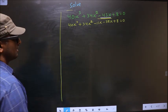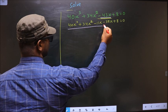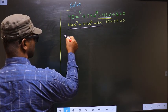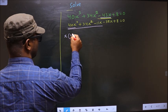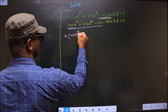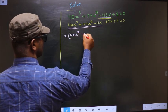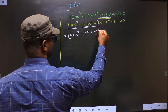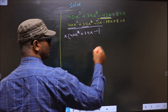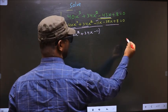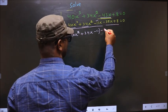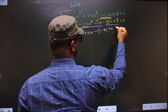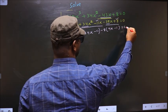Now from the first three terms, what can you take out common is x. So here you get 40x square, and here you get plus 34x, and here you get minus 11. Now from the last two terms what can you take out common is minus 8. Here you get 4x and here you get minus 1 equal to 0.